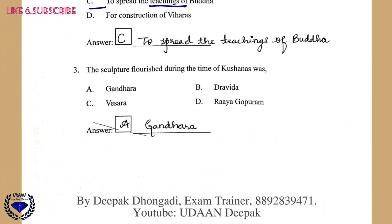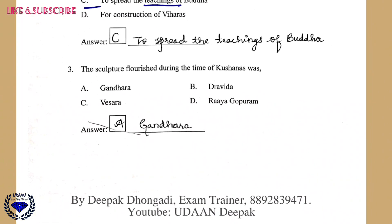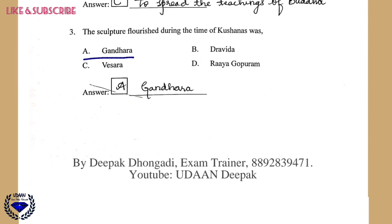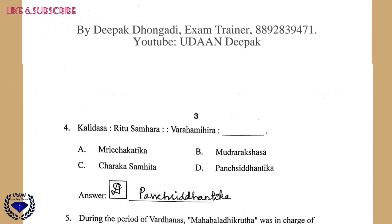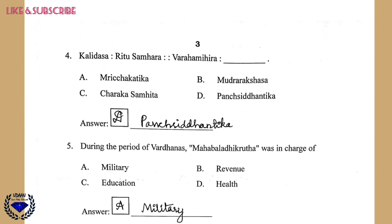Question 3: The sculpture that flourished during the time of the Kushanas — the answer is Gandhara, option A. Question 4: Kalidasa has written Ritu Samhara, and Varaha Mihira has written Pancha Siddhantika. The right answer is option D.